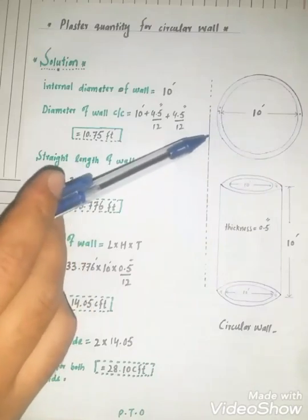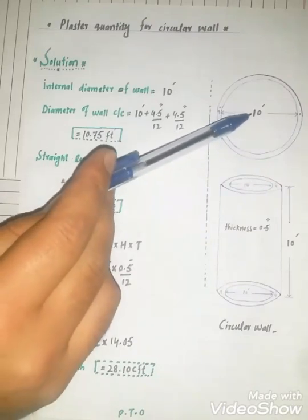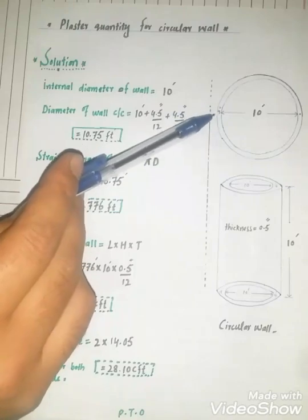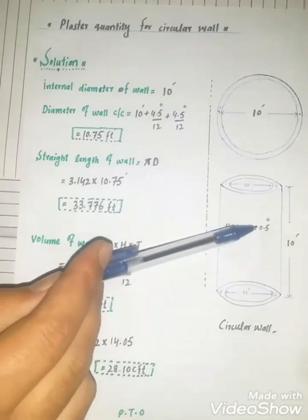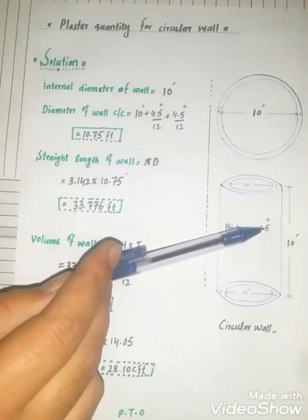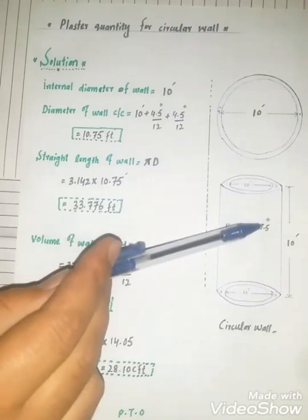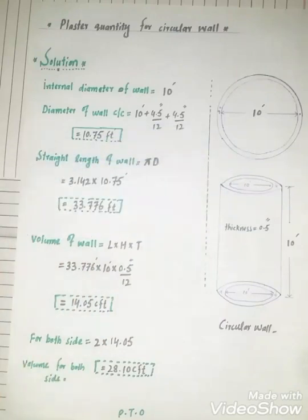For example, this is a plain circular wall. The internal diameter is 10 feet and the thickness of wall is 9 inches. Height of wall is 10 feet and thickness of plaster is 0.5 inch or 1 over 2 inch.